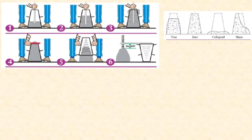First layer: 25 tamps. Second layer: again 25 tamps. Third layer: 25 tamps. Level the concrete, then raise the cone and check the slump. This subsidence is the slump.